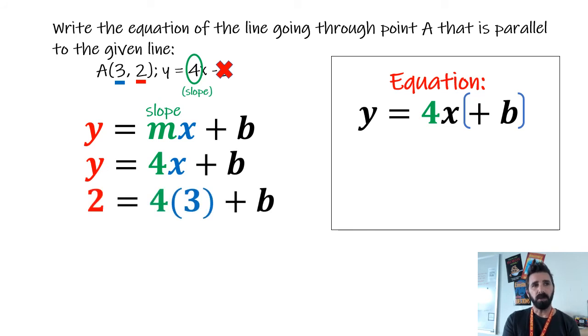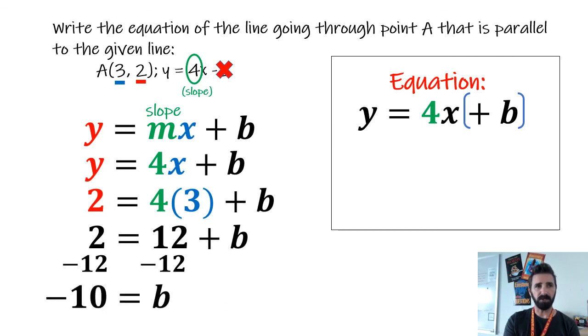And so when we do that, we've got 3 for our x, 2 for our y. Now we can just solve for that b value that's missing. 4 times 3 is 12. And now we have a shorter equation that we can solve by simply subtracting 12 from both sides. We find out that our b value is negative 10.